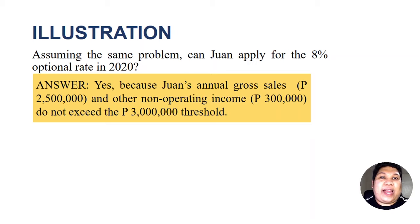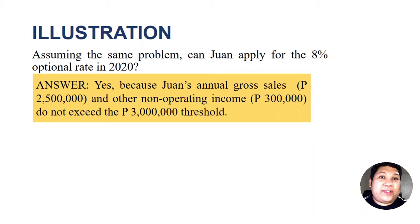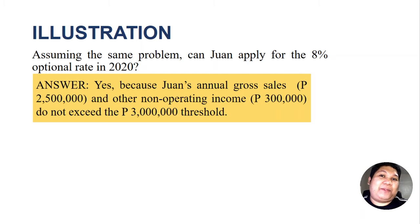What if Juan's annual gross sales and other income in 2019 do not exceed ₱3 million, but in 2020 Juan fails to choose the 8% optional rate upon registration? Then the regular graduated rates will apply, because he failed to choose the 8%. The 8% is optional — it is a privilege — so he must clearly indicate that he is applying for and is qualified for the 8% optional rate. He can only do so once every year when he registers or renews his registration with the BIR.